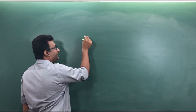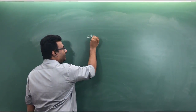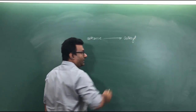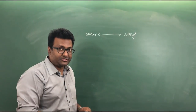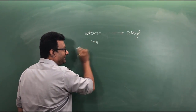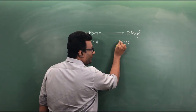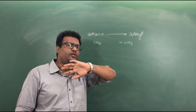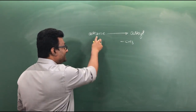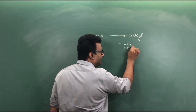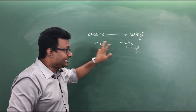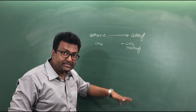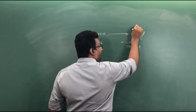Alkane will become alkyl when it loses one or more hydrogen atoms. CH4 is methane; it will become CH3 with one valency yet to be satisfied. This valency can be satisfied by hydrogen or other elements, atoms, or functional groups. Similarly, ethane can become ethyl with the loss of one hydrogen, keeping one valency open. So it's methyl, ethyl, propyl, and so on — represented by R.